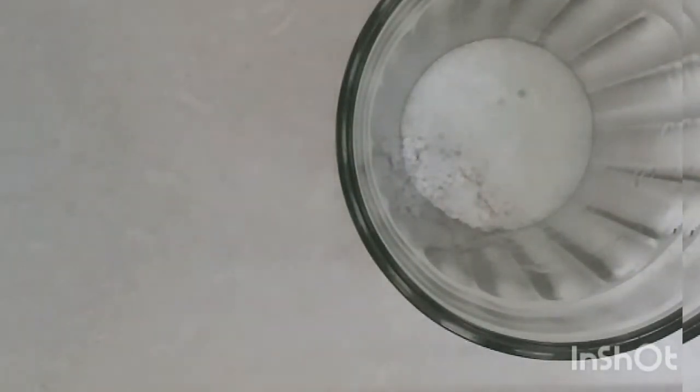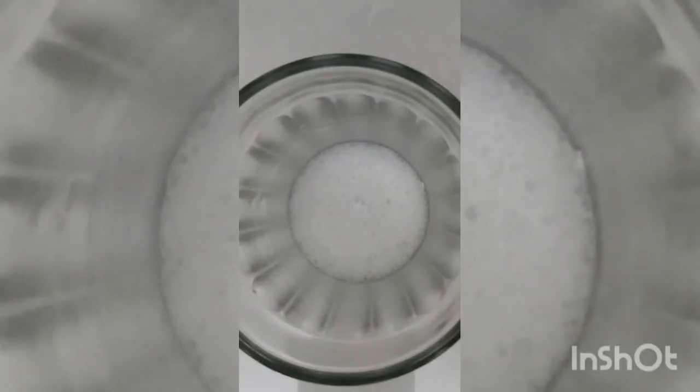Baking soda and lemon juice are two different kinds of chemicals. They react with each other and produce carbon dioxide gas and some other substances. The bubbles we see are formed by the carbon dioxide gas.